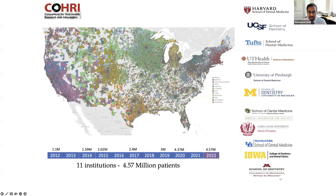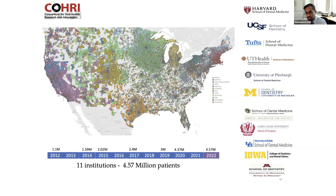With 4 million patients, we have a pretty good spread across the country and are looking to have more institutions participate. These institutions all use the Axiom EHR, but we are currently working with sites adopting new EHRs to onboard their data into Big Mouth, and also for new sites using another EHR to participate. We're also very hopeful that other large or medium-sized clinical practices will start contributing to Big Mouth in the future, giving us a different lens in terms of our patient pool.